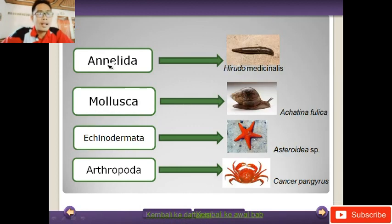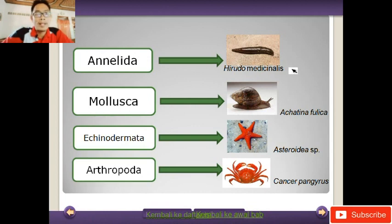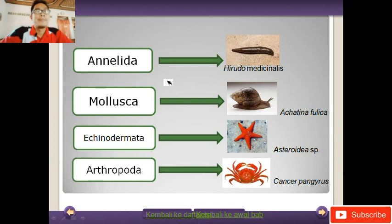Berikutnya Annelida. Salah satu contohnya adalah Hirudo medicinalis. Ini masih berkaitan dengan cacing, yang biasa kalian gunakan untuk memancing, salah satunya cacing tanah. Hirudo medicinalis bukan cacing tanah melainkan lintah, yang biasa digunakan untuk terapi. Ini satu keluarga dengan cacing tanah. Kemudian Mollusca, yaitu hewan lunak. Contohnya adalah Achatina fulica, yaitu bekicot.